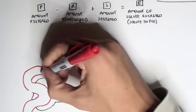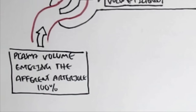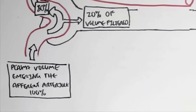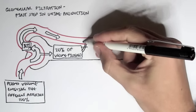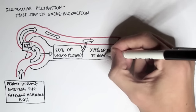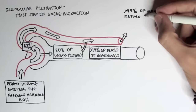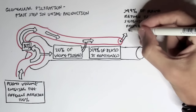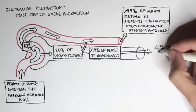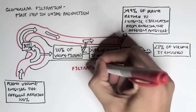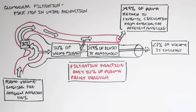Let's begin looking at urine production by firstly looking at filtration — glomerular filtration — which is the first step in urine production. Plasma volume entering the afferent arteriole is about 100%; 20% of this is filtered into the nephron, leaving 80% still in the bloodstream. More than 19% of the filtered 20% will actually be reabsorbed, so more than 99% of the plasma returns to systemic circulation, meaning less than 1% is actually excreted. An important terminology to know is filtration fraction, which is the amount of plasma filtered from the glomerulus into the nephron — and this is 20%.